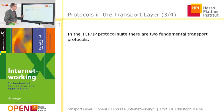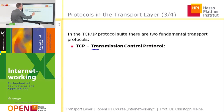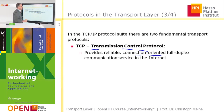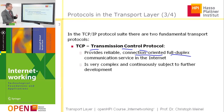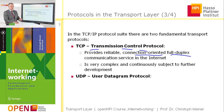Besides the TCP protocol, there is a second important protocol on the transport layer. The TCP protocol — the Transmission Control Protocol — provides a reliable, connection-oriented, full-duplex communication service in the internet. To achieve this, it is very complex, has a lot of features, and is subject to continuous development. We will spend most of the time this week exploring this functionality.